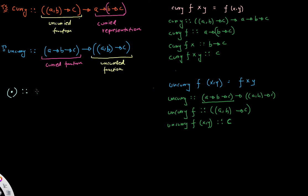The function composition operator takes in as a first parameter a function that goes from B to C, and as a second parameter a function that goes from A to B. It gives you back a new function that goes from A to C.